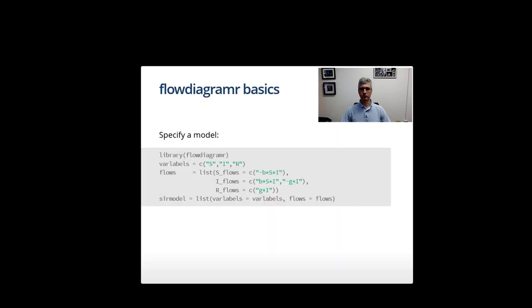Here are the basics of flowdiagram. First you specify the model: it's very simple, you define a vector of variable names and then for each variable you define vectors of flows in this kind of nested list structure.